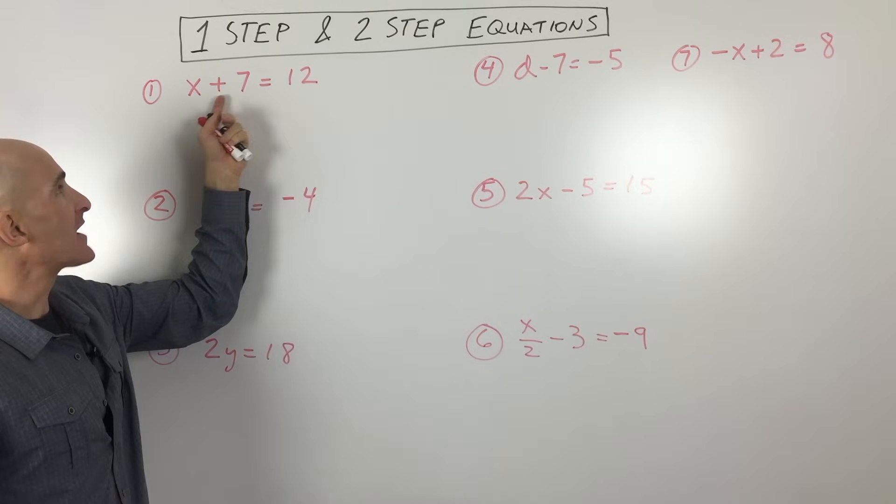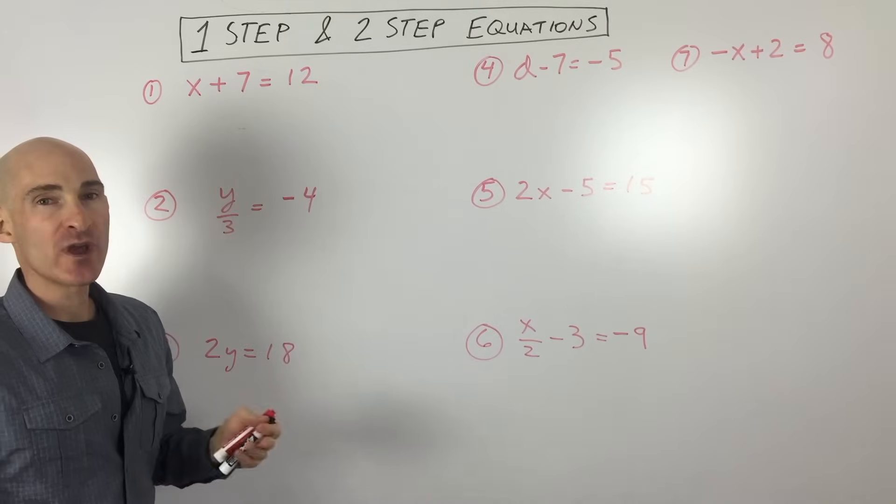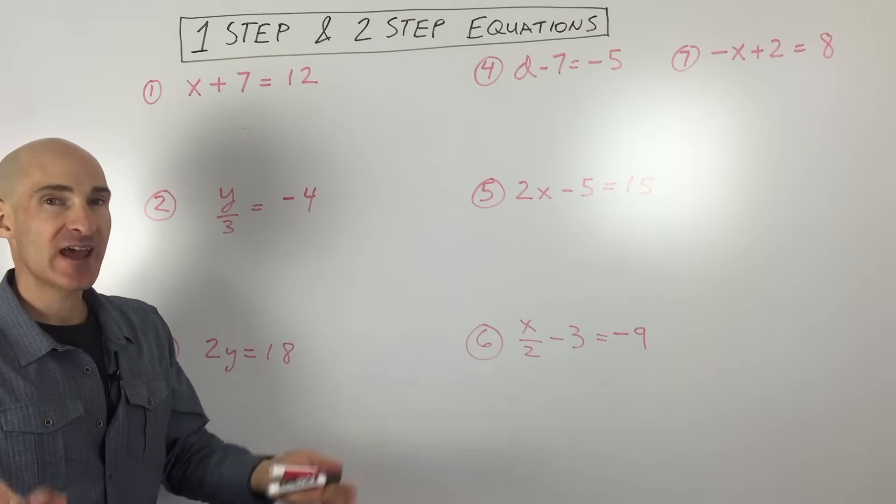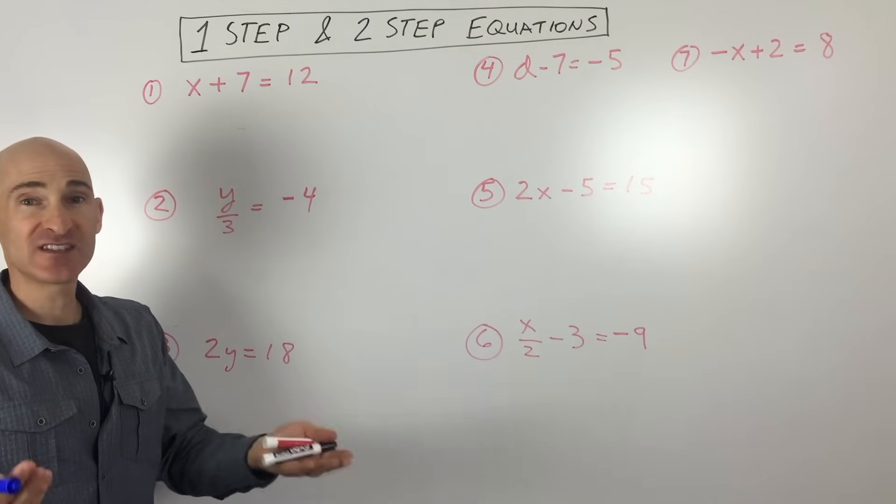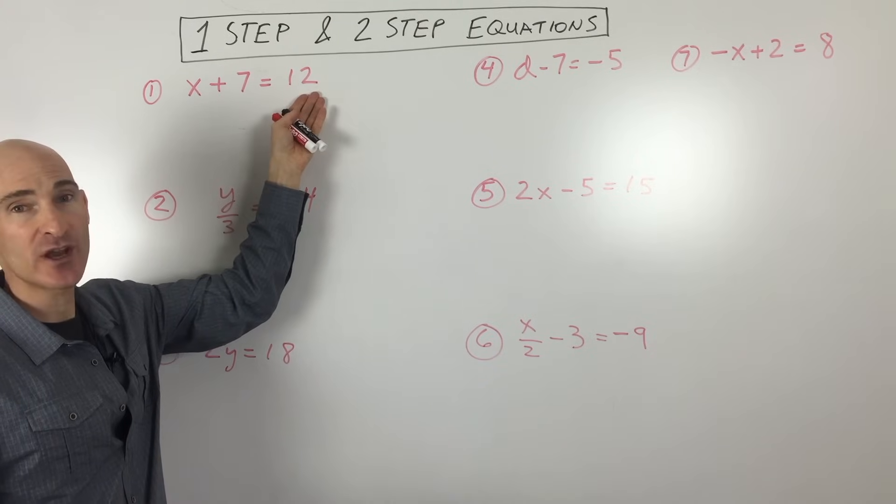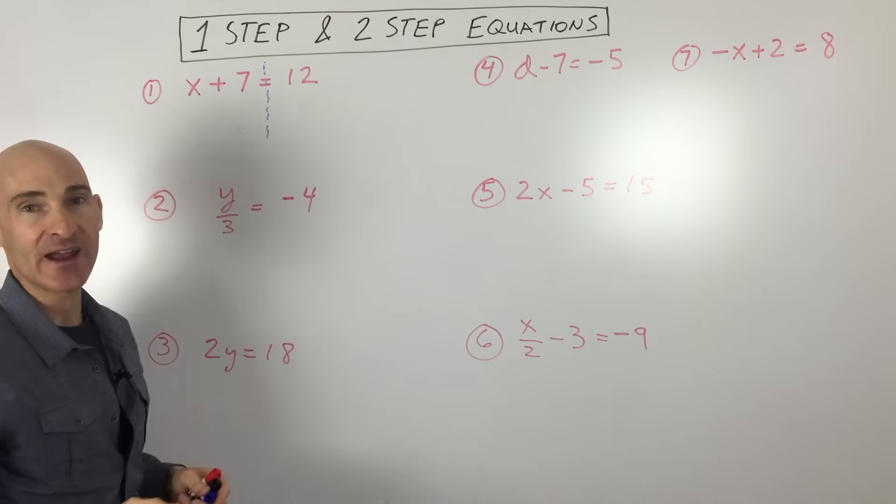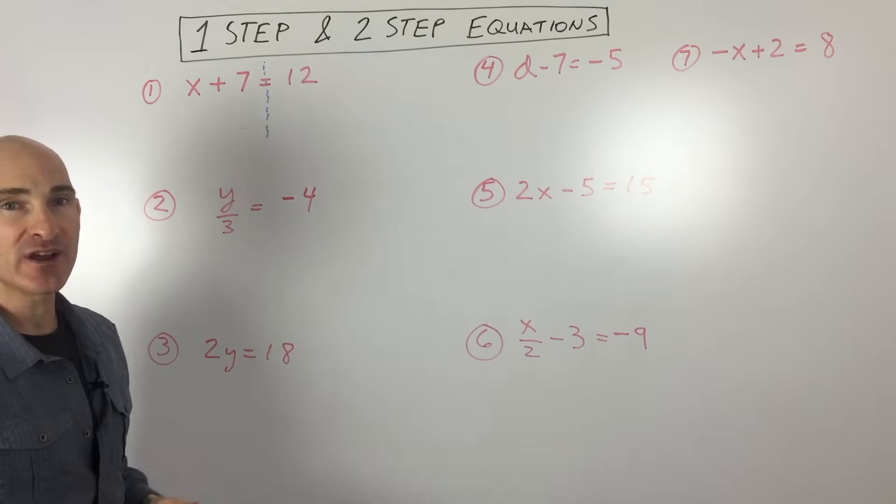First one, you can see it's x plus 7 equals 12. If you're learning about equations, you know that the left side and the right side have to be equivalent. They have to be the same. They have to be equal. So whatever you do to one side of the equation, you want to do the same thing to the other side. You can think of this as like an imaginary dividing line, separating the left and the right sides.